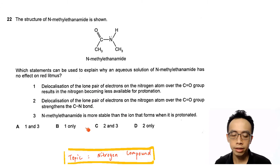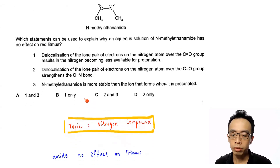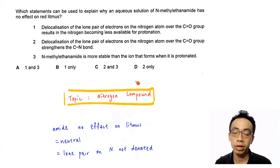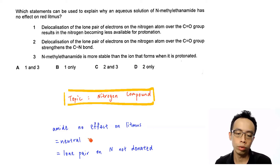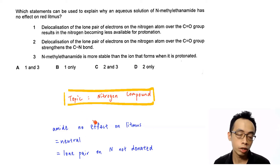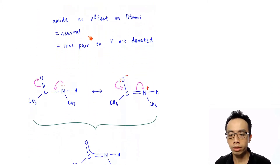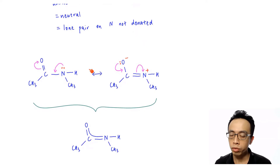The topic tested in this exercise is under nitrogen compounds. As mentioned, if the question states that an amide has no effect on red litmus, this means that the amide is neutral. The nitrogen will not donate the lone pair at all. Let us try to understand why this is the case. The lone pair on the nitrogen is delocalized into the C=O group, the acyl group.